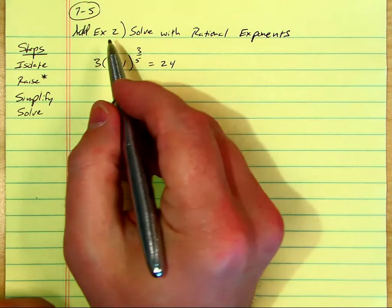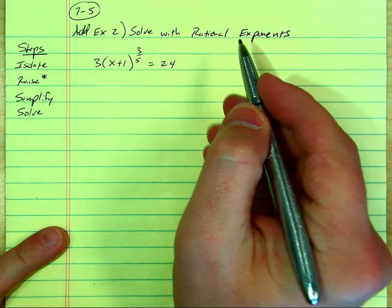Alright, here is 7-5, it's example 2, solving with rational exponents.